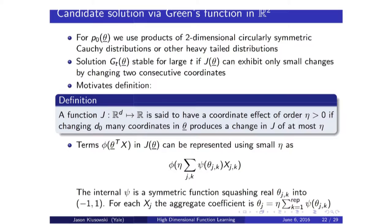For p_0 of theta, we use products of two-dimensional circularly symmetric quotient distributions — the two-dimensional density is just a function of the norm of the vector, a radial function. We could also use other heavy-tailed distributions whose densities decay polynomially, such as Cauchy or uniform on some ball. The reason for using heavy-tailed distributions is that they affect the behavior of the change function g_T in a very direct way.